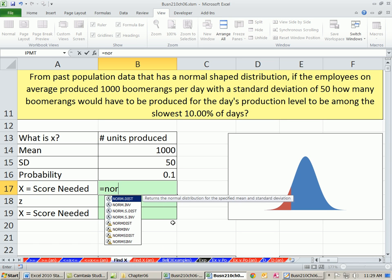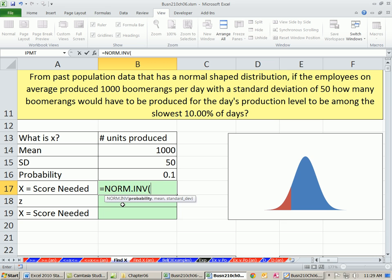We use NORM.INV. The inverse functions spit out either an X or Z. This is not the S for standard normal, so it spits out the X. We enter the probability 0.1 because we're interested in the low end, then the mean and standard deviation.